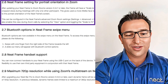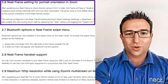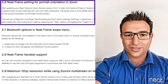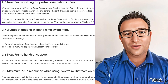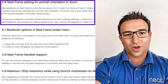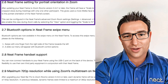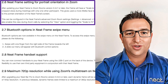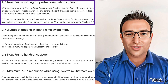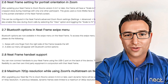Feature 6 is exclusively for Neat Frame running Zoom software. This enables the device to have a great experience in a one-to-one call, much like it does today when running Microsoft Teams. You can also control this in the user interface at any time during a Zoom call.